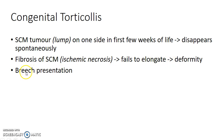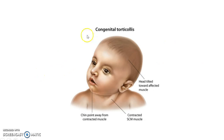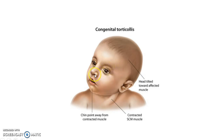Congenital Torticollis is more common in children with breech presentation. This picture demonstrates the features: the head will be tilted towards the affected muscle, the chin points away from the contracted muscle, and a prominent contracted sternocleidomastoid can be seen.